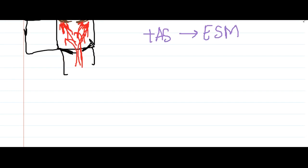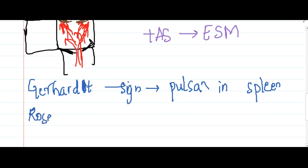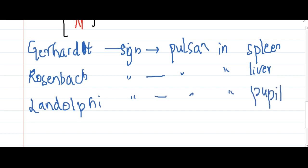Additional signs include Gerhardt sign — pulsations in the spleen; Rosenbach sign — pulsations in the liver; and Landolfi sign — pulsations in the pupil.